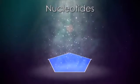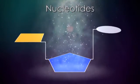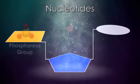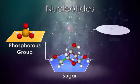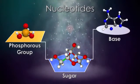DNA is made of subunits called nucleotides. Each nucleotide has a phosphorous group, a sugar, and a special nitrogen-containing molecule called a base.